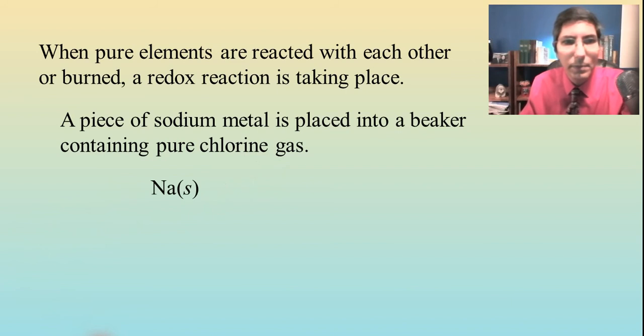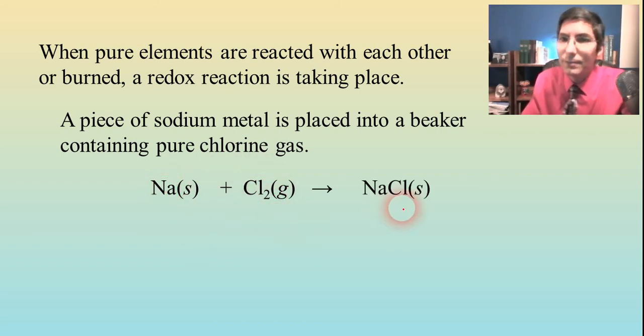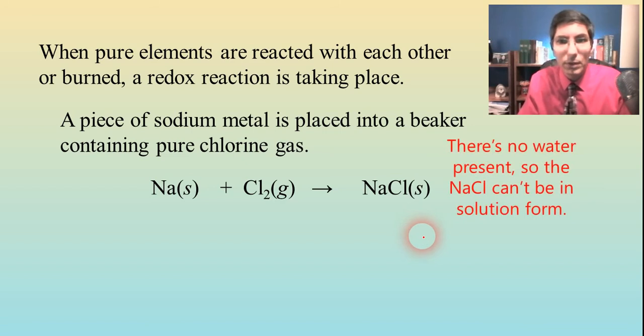So we have sodium metal and we're going to add it to chlorine gas. That's Cl2. And when we add Na and Cl2, we get NaCl, because positive one and the negative one. And so that's the reaction. I know you have to balance it.